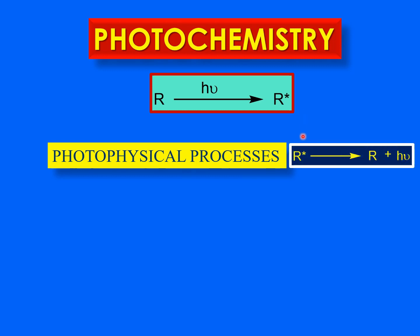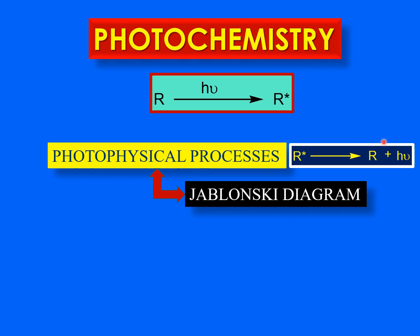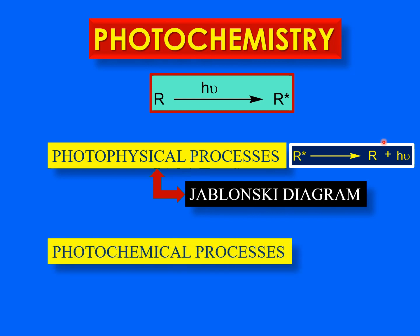The first type of processes are the photophysical processes. In these processes, the excited state comes down to the ground state — the molecule in the excited state jumps down to the ground state with the emission of radiation. Remember that the wavelength of this emitted radiation is usually longer than the one that was initially absorbed by the molecule. These photophysical processes are explained with the help of the Jablonski diagram, which is our today's topic.